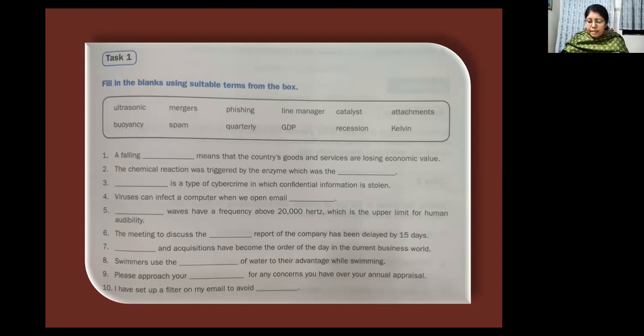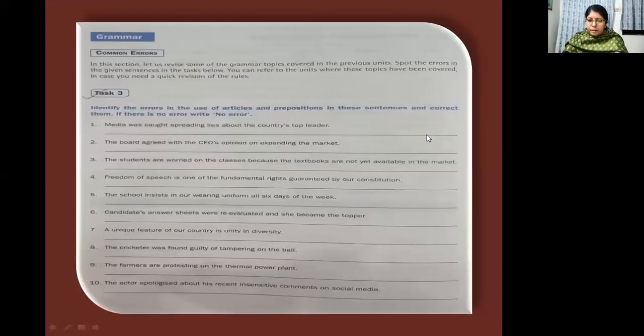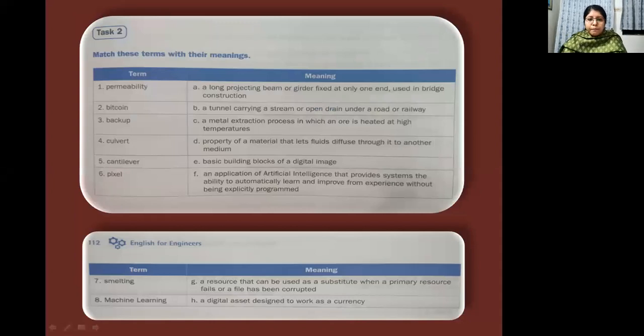So we'll go to the next task. We'll go on to these. You have to fill in the blanks with these sentences. So what about the next task? We have another exercise on this. Yes, task two. Here, match these terms with their meaning. So in one column you have the term, the second column you have the meaning. So how do you match these terms?